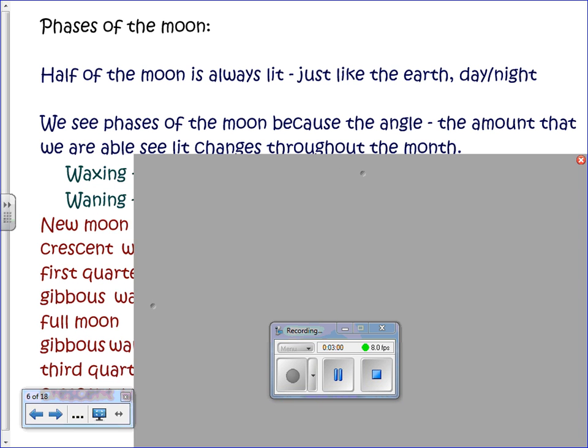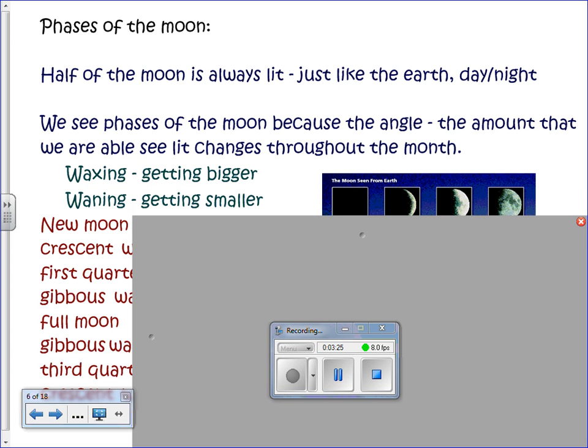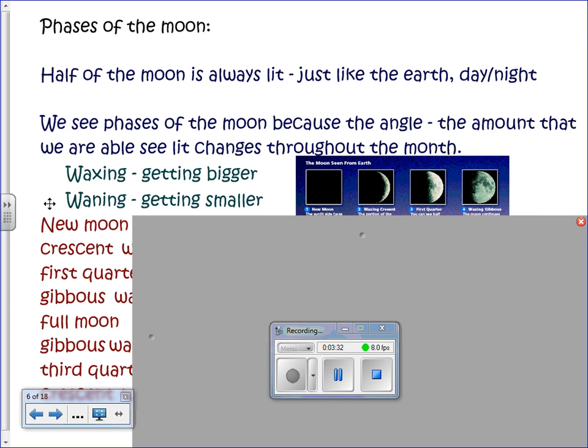Okay, so back to the moon here. Waxing and waning. When we describe what the moon looks like, we talk about it as either waxing or waning. All of these words you will need to know for the quiz on Friday. If the phases of the moon are waxing, if the moon is waxing, what does that mean? The part that is lit is getting bigger. And so then waning means the part we see is getting smaller.